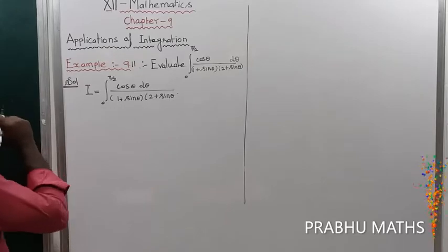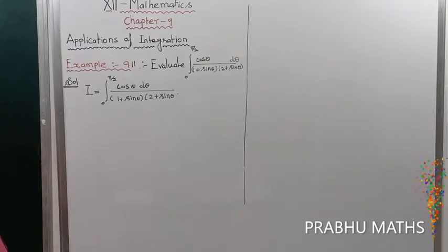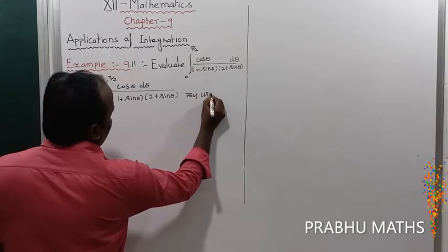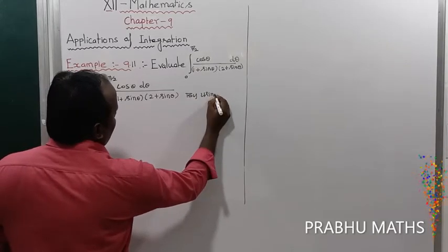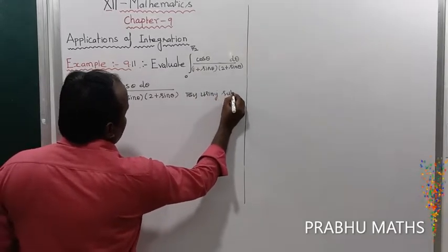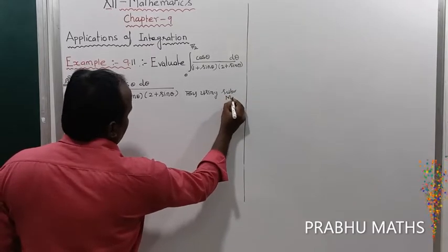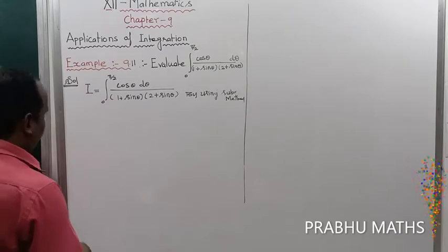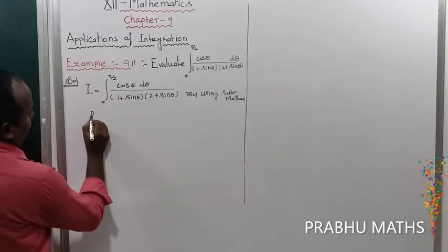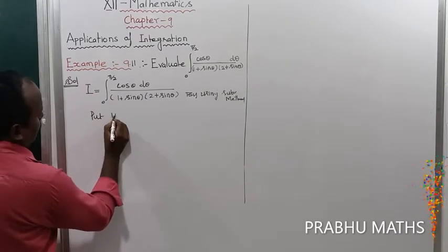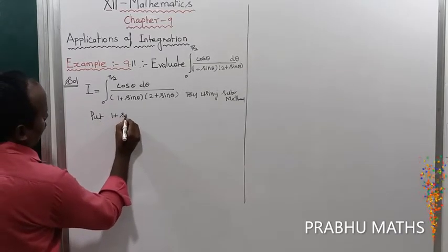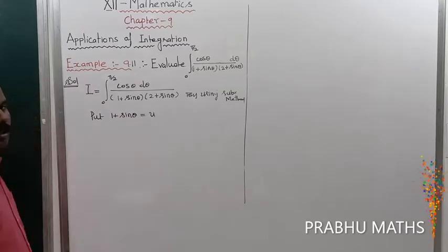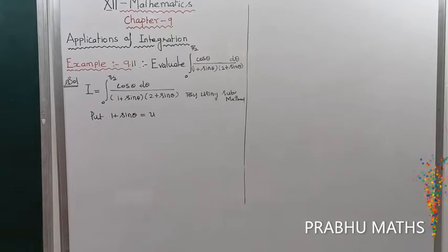We integrate by the substitution method only. By using substitution method, put 1 + sin θ = u.